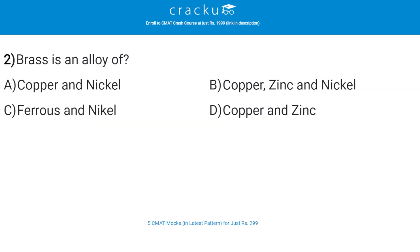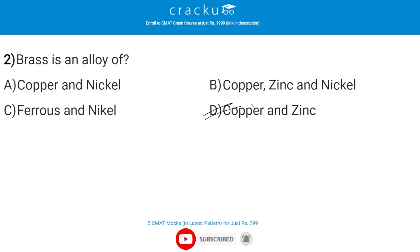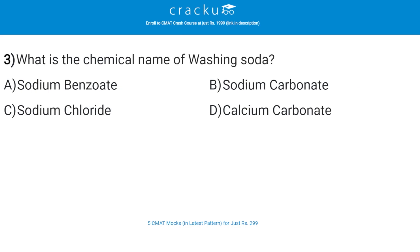The next question: brass is an alloy of? The correct answer is D — copper and zinc. Brass is an alloy of copper and zinc, of historical and enduring importance because of its hardness and workability.